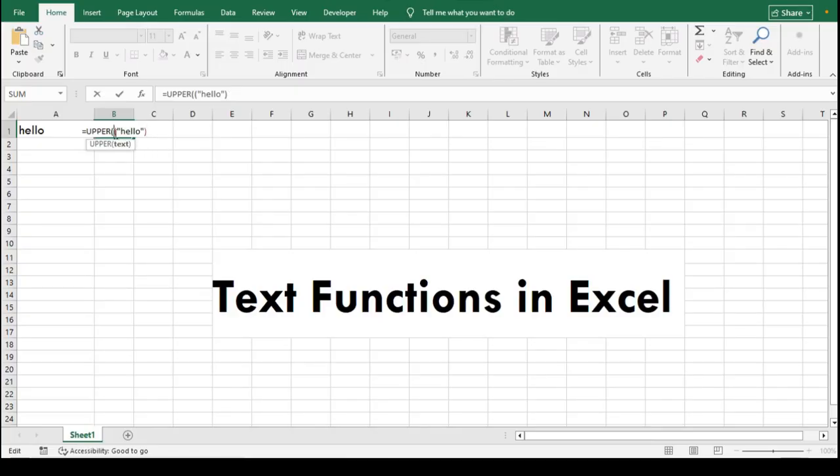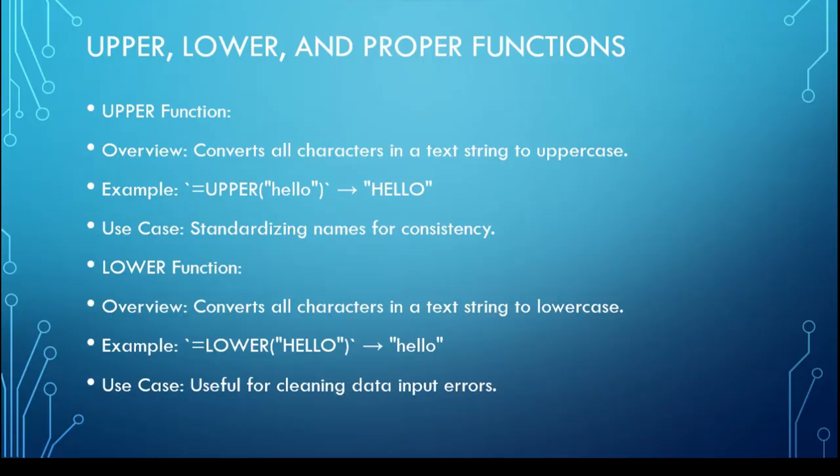For a data analyst, the UPPER function is beneficial as it aids in maintaining uniformity in data entries, particularly when dealing with names, product codes, or categorical labels. By ensuring that all text is in a consistent format, analysts can minimize errors during data comparison and enhance the accuracy of data filtering and sorting processes.